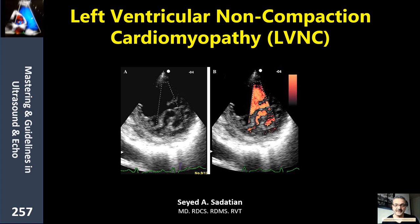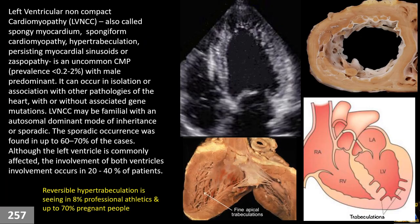Welcome to Mastering and Guideline in Ultrasound and ECHO. Today we are covering left ventricular non-compact cardiomyopathy. Sometimes they call it spongy myocardium, spongiform cardiomyopathy, hyper-trabeculation, persistent myocardial sinusoid, and zaspopathy, and so on. The different names represent that we have a different spectral disease. For making more common sense, I use the term left ventricular hyper-trabeculation — you will notice shortly why.